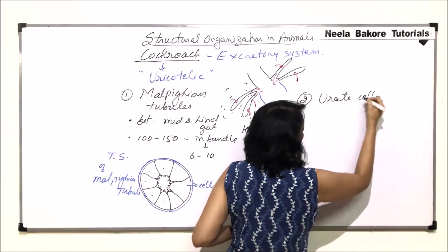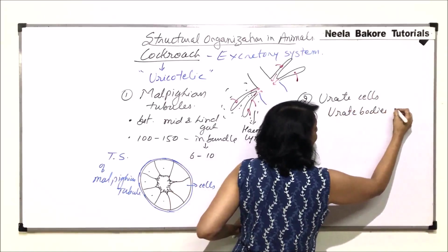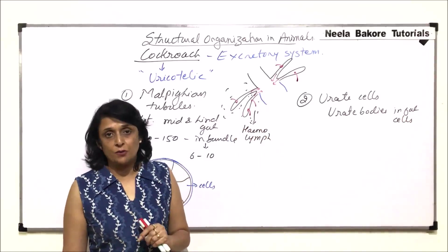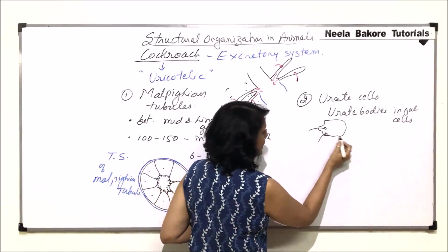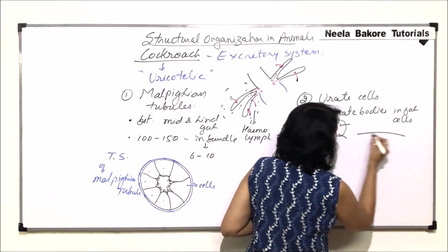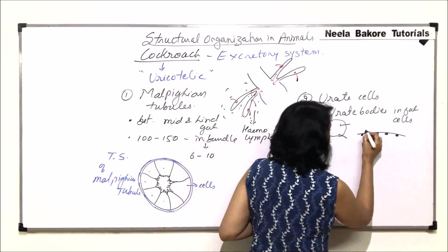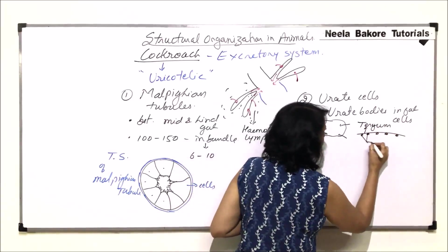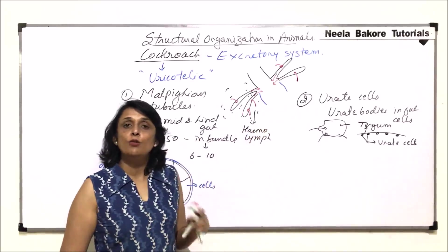The second structure which helps in excretion in cockroaches is known as urate cells, sometimes also called urate bodies, found in fat cells. They remove waste by storage excretion. These are large, yellowish-colored, irregular cells. They keep collecting uric acid, and once they are completely loaded with uric acid, these cells go and get attached on the inner side of the exoskeletal plate — for example, the tergum, which is the dorsal plate. So these are loaded urate cells, full with uric acid.